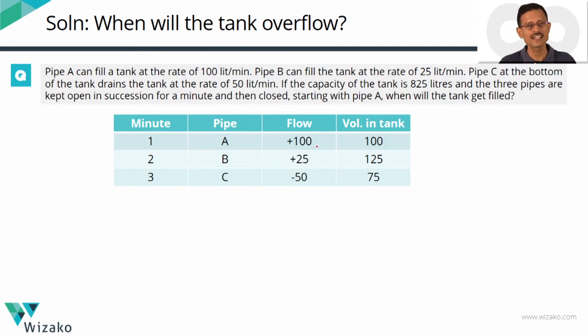First minute pipe A fills 100 liters into the tank so at the end of one minute we'll find the tank having 100 liters of water in it. Minute two pipe A is shut, only B is kept open. B is also a fill pipe, fills at the rate of 25 liters per minute so at the end of the second minute we'll find that there are 125 liters of water in the tank. 100 at the end of minute one plus 25 added during minute two ends up with 125 liters at the end of minute two.